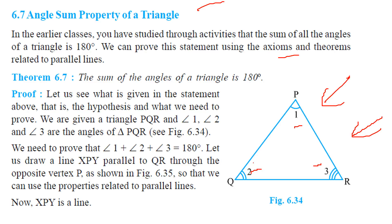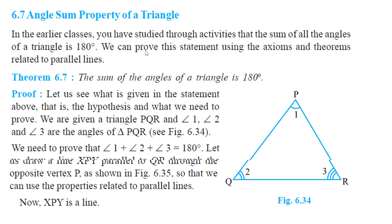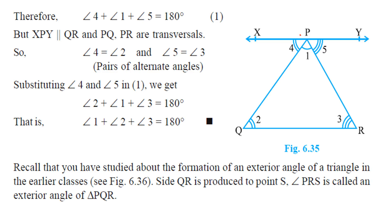Now let us draw a line XPY parallel to QR. So XPY is now a line. In this case, angle 4 plus angle 1 plus angle 5 equals 180 degrees, and we know that angle 4 is equal to angle 2, and angle 5 is equal to angle 3, because these two lines are parallel.